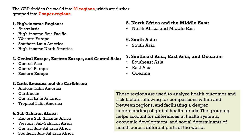The third categorization is Latin America and the Caribbean. Sub-Saharan Africa is the fourth super region. North Africa and the Middle East is one region. South Asia, which includes India, Bangladesh, Pakistan, Maldives and so on, is another region. Then we have Southeast Asia, East Asia and Oceania as the seventh region. These regions are used to analyze health outcomes and risk factors, allowing for comparisons within and between regions, and facilitating a deeper understanding of global health trends.